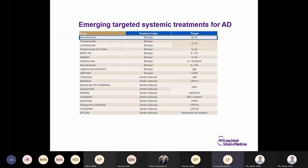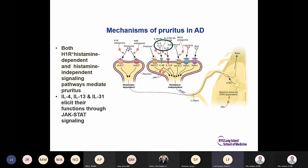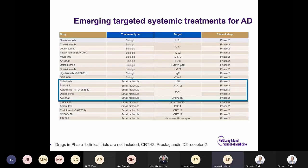Nemolizumab targets IL-31. The mechanisms of pruritus in atopic dermatitis involve both histamine-dependent and histamine-independent signaling pathways. IL-4, IL-13, and IL-31 elicit their functions through the JAK-STAT signaling pathway. IL-31 is now in phase two trials for treatment of atopic dermatitis and pruritus.